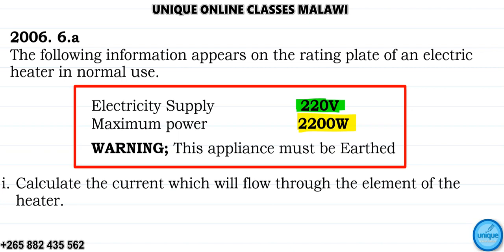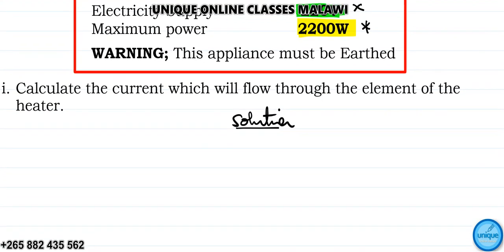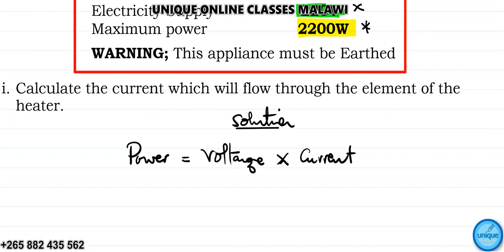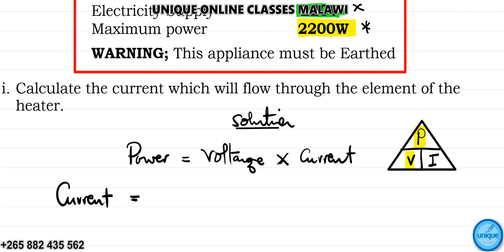Since we have voltage and power, we use the power formula. Power is equal to voltage times current. Using the famous triangle, current is simply a matter of dividing — current equals power divided by voltage.